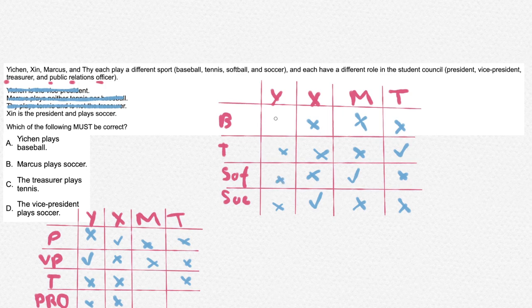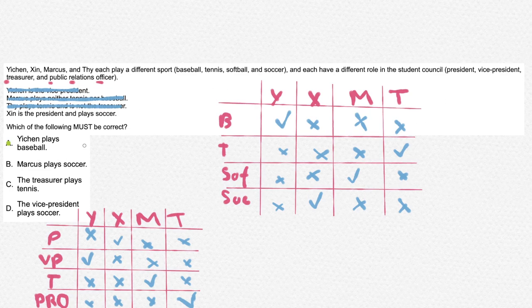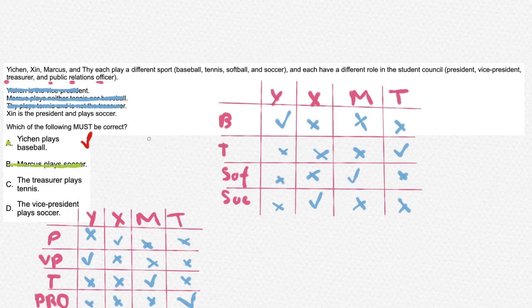Now we can finish up our table by filling the empty spaces with ticks and crosses. Since there are only three remaining options, we can determine that each person plays their respective sport or holds their position. 'Yichin plays basketball' — as you can see in the table, Yichin plays basketball, and that is our answer. 'Marcus plays soccer' — incorrect, as he plays softball. 'The treasurer plays tennis' — the treasurer is Marcus, who plays softball, not tennis, so option C is incorrect. 'The vice president plays soccer' — the vice president is Yichin, who plays basketball, not soccer. Therefore, option A is correct.